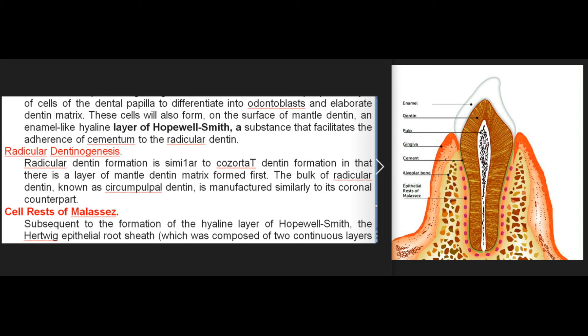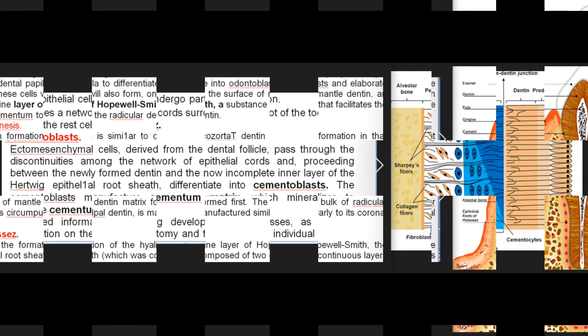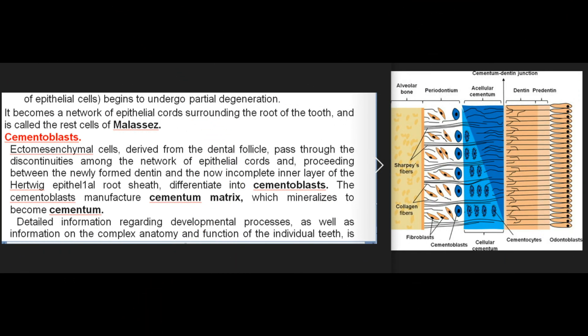Radicular dentin formation is similar to coronal dentin formation in that there is a layer of mantle dentin matrix formed first; the bulk of radicular dentin, known as circumpulpal dentin, is manufactured similarly to its coronal counterpart. Subsequent to the formation of the hyaline layer of Hopewell-Smith, the Hertwig epithelial root sheath, which was composed of two continuous layers of epithelial cells, begins to undergo partial degeneration.